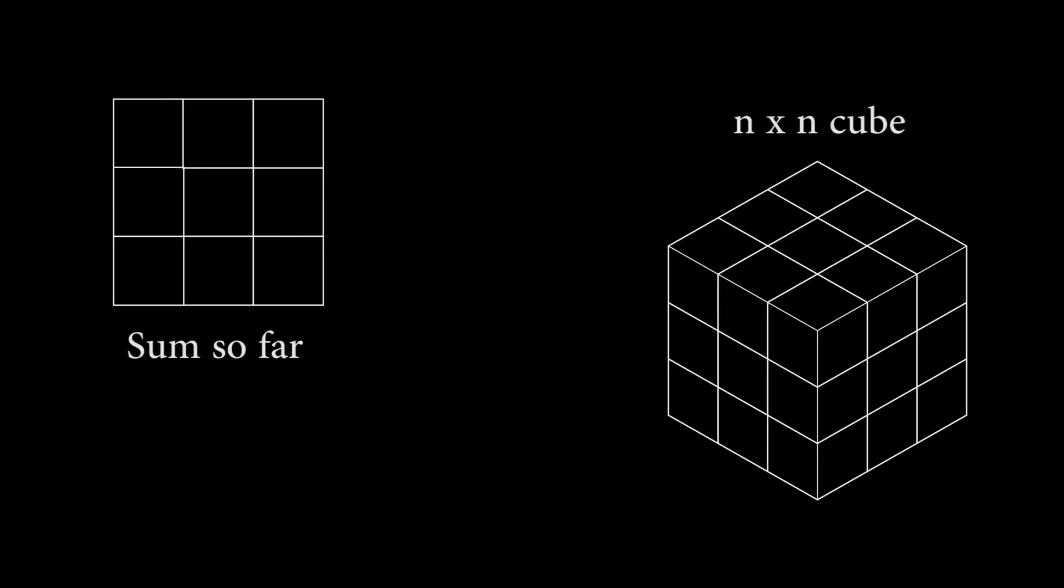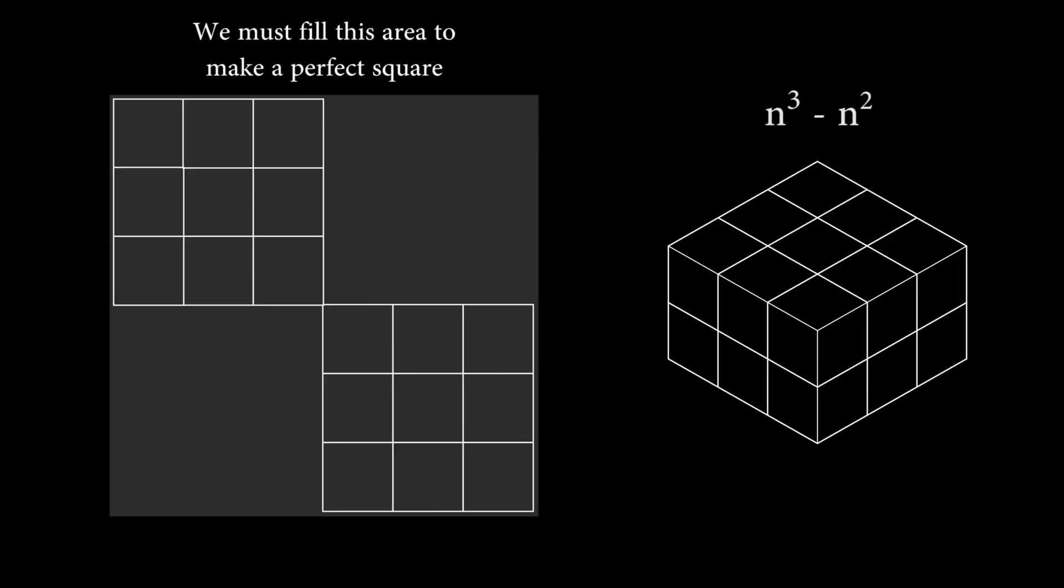We always start by adding only one layer of the cube to our sum. Notice that every layer of n cubed is composed of exactly n squared unit cubes. This means that there are n cubed minus n squared remaining unit cubes on the right that we somehow need to fit into the square on the left.